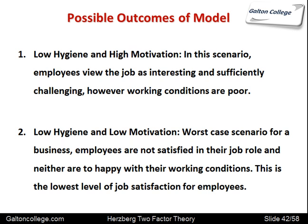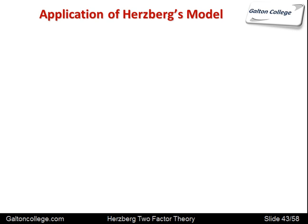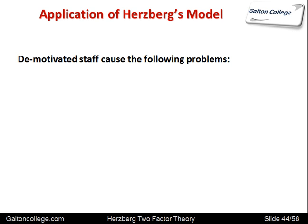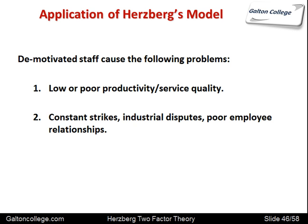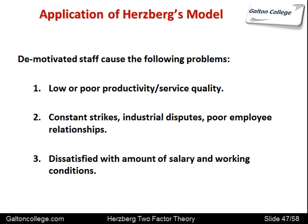Now, the application of the model. Demotivated staff cause the following problems: low or poor productivity, constant strikes or industrial disputes, and poor employee relations. The workers are unhappy, frustrated, and annoyed. They want the business to change and become a better place to work but can't see any way of doing it, leading to industrial issues and dissatisfaction over salary and working conditions.